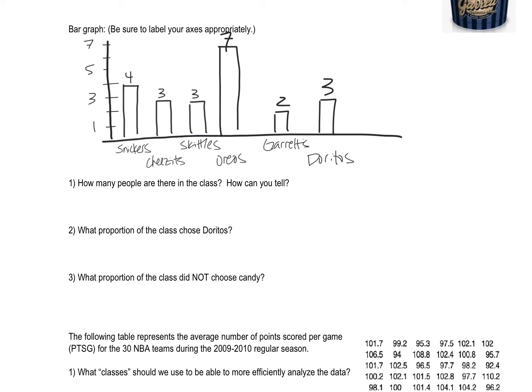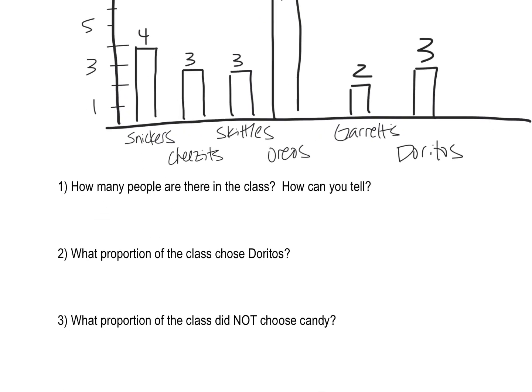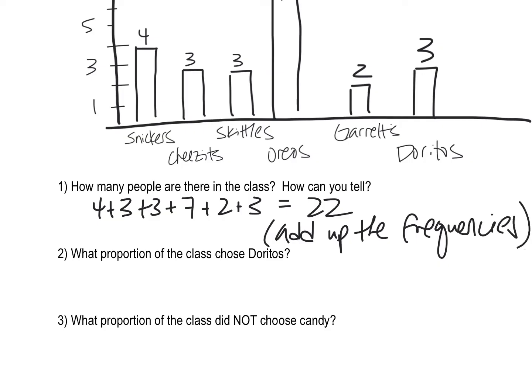How many people are in the class? How can you tell? Well, what I could do is add up all my tallies and my little frequency graph up there, or couldn't I just add all these numbers up? Yes, that would probably be a little bit faster. So, 4 plus 3 plus 3 plus 7 plus 2 plus 3 equals 22. All I did is I added up the frequencies. I'm trying to use vocab words whenever possible. It's not a good idea in stats to use words like numbers, data - use more professional language.